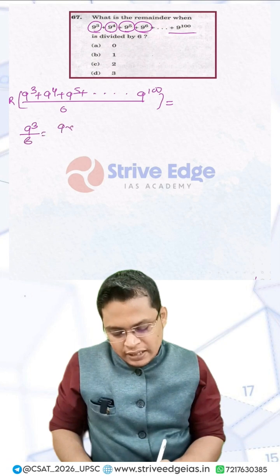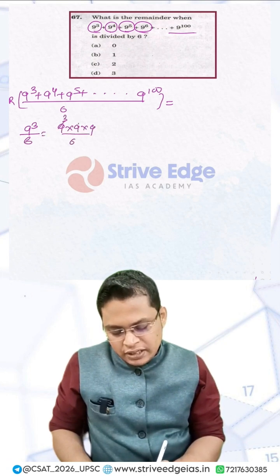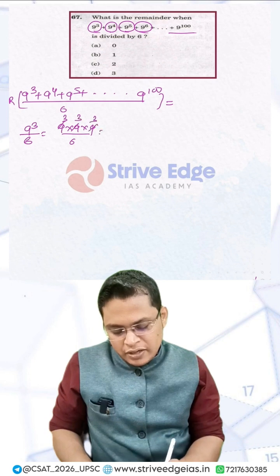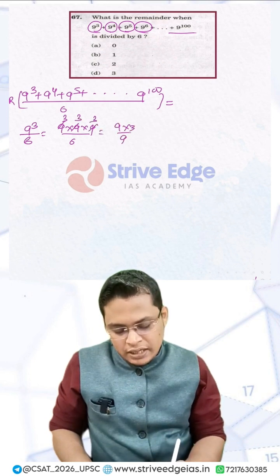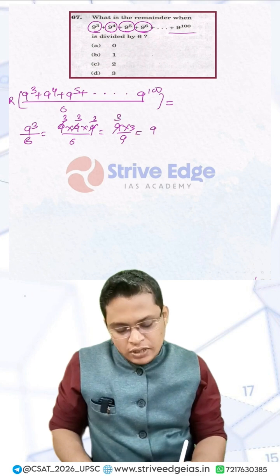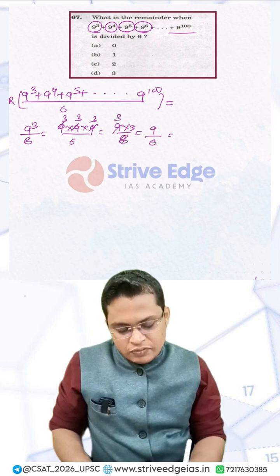For 9³ divided by 6, I write it as 9 × 9 × 9 divided by 6. Each 9 divided by 6 gives a remainder of 3. So we get 3 × 3 × 3, which is 9 × 3 divided by 6. That gives remainder 3, so 9³ divided by 6 gives a remainder of 3.